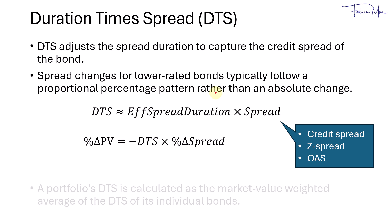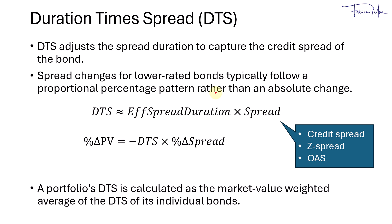For portfolios, the DTS is calculated as the market-value weighted average of the DTS of its individual bonds.